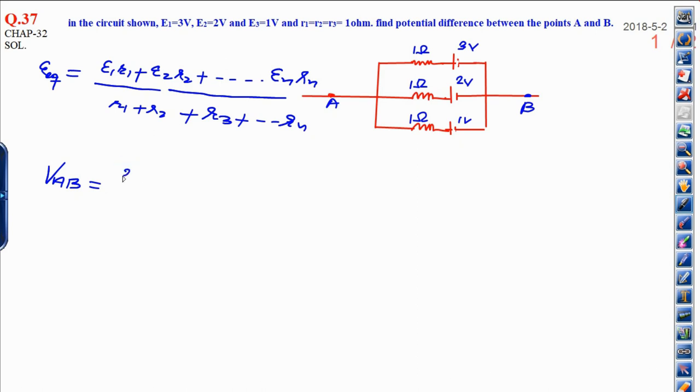E1 means 3, R1 is 1, plus E2 R2 that is 2 into 1, plus E3 that is 1 volt into 1, divided by sum of all resistors that is 1 plus 1 plus 1. And finally, we get 3 plus 2 plus 1 whole divided by 3. It will be 6 upon 3 which is equal to 2 volt.